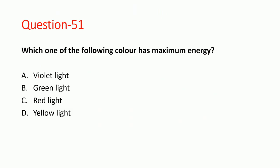First question — before discussing the answer, pause the video and try to answer and verify whether your answer is correct or not. Question 51: which one of the following colors has maximum energy? Violet has maximum energy because violet waves have the shortest wavelength. The wavelength of violet rays is the shortest in the visible light spectrum and they carry the most energy.